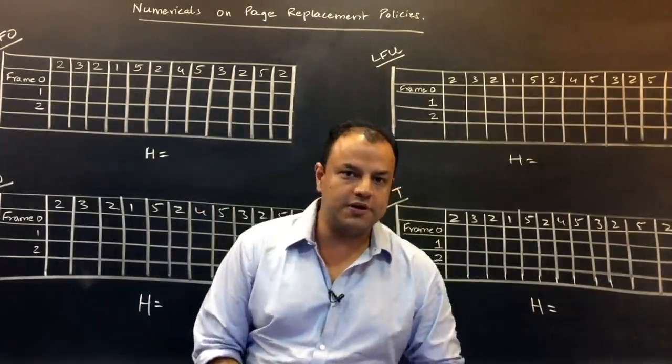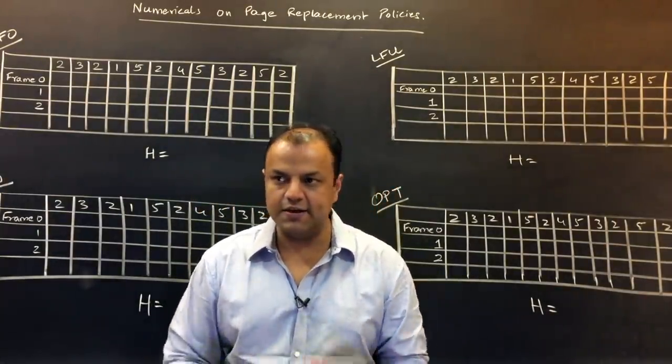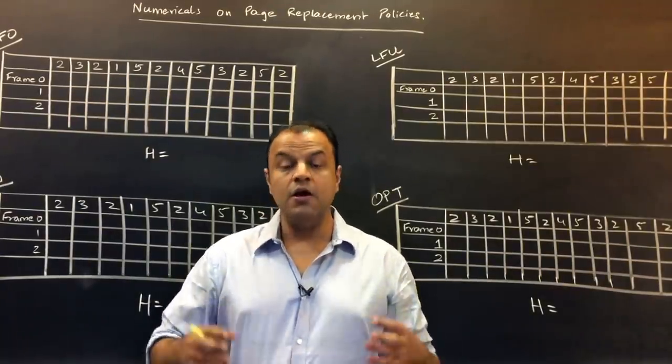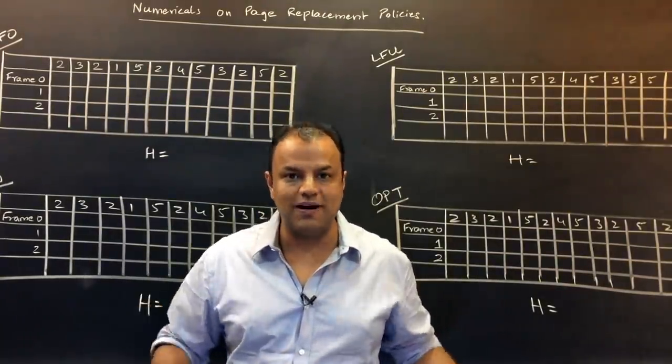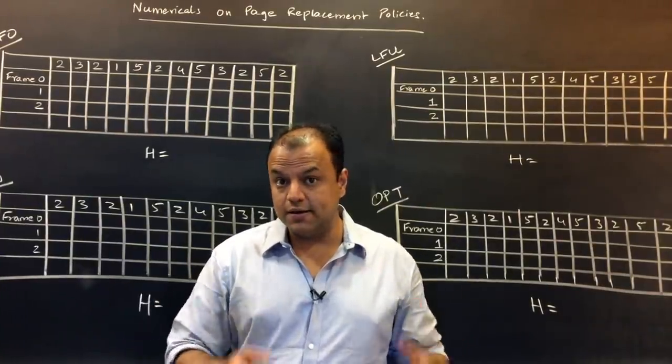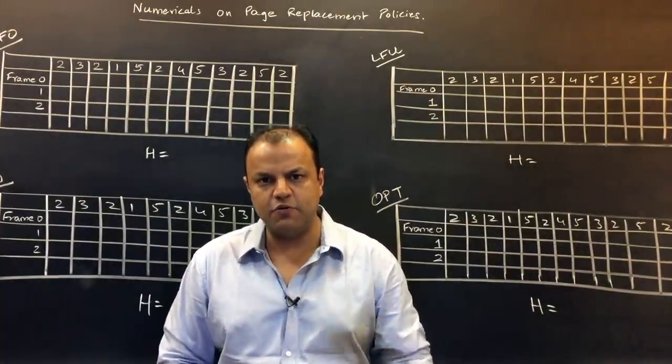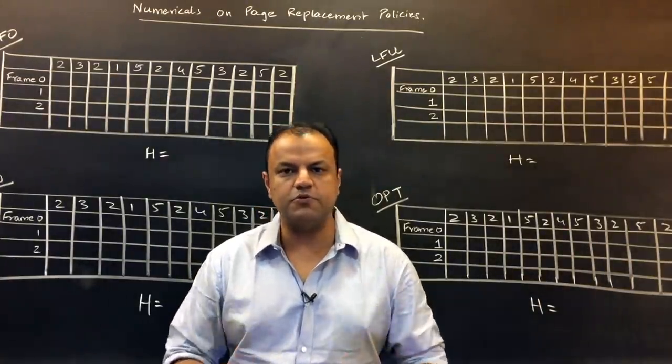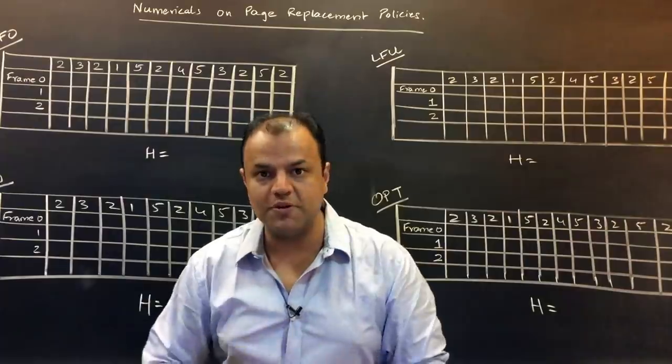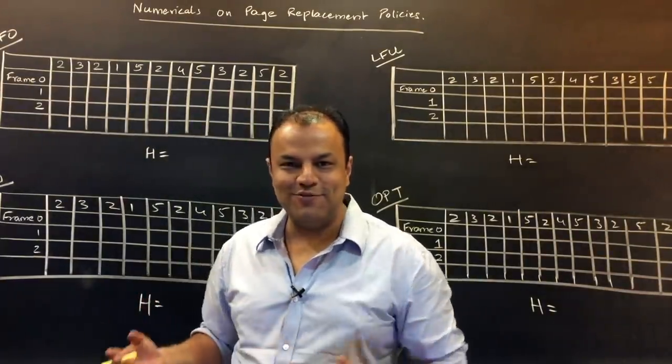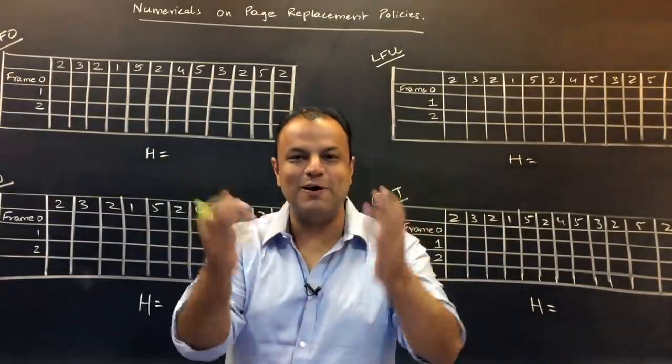I always prefer numericals in COA subject and in microprocessor subject, always tell students focus on programming, focus on designing because these are questions that give full marks. These are theory subjects. Other questions are theory answers. In theory answers, even if you tried your heart out, examiners refrain from giving a 10 out of 10 because there's always a possibility of an examiner expecting something more from the answer. But here, it's a question. It's a numerical. Solve it correct with a perfect final answer. You're bound to get 10 out of 10.